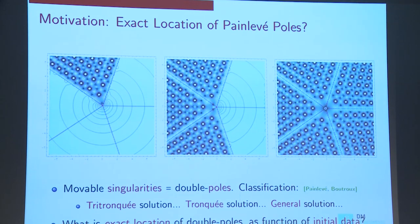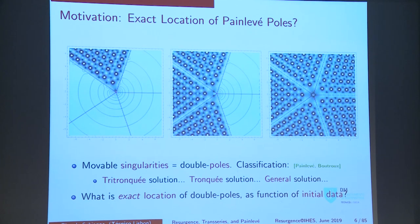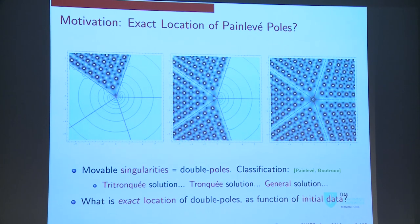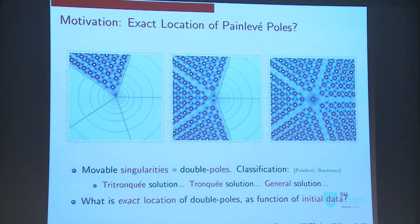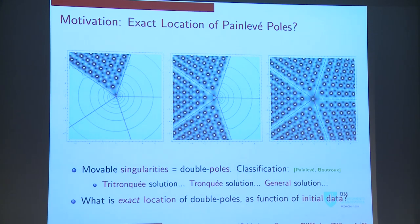There's also a mathematical motivation to look at this. These are the famous poles of the Painlevé-1 equation. The Painlevé-1 equation has a Z5 symmetry, so there are five pizza slices on the complex plane of Z, and it has movable singularities — which are double poles. This has been classified over a hundred years ago by Boutroux. Poles can accumulate in one pizza slice — the so-called tri-tronquée solution — on three adjacent pizza slices — the tronquée solution — or everywhere, which is the general solution. You can ask: what is the exact location of these double poles? They depend on initial data, or boundary data, or trans-series parameters.